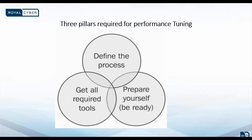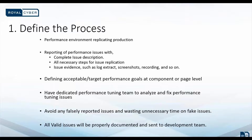The first pillar — defining the process — is the most important task. This process includes elements like maintaining a proper performance load test environment, which is a replica of production. Defining a proper process for reporting performance issues, which includes complete issue description, all necessary steps to replicate the issue, issue evidence such as log extracts, screenshots, recording, and so on. And then, validating the performance issues so we can avoid all falsely reported issues. Defining acceptable target performance goals at component or page level, and also having a dedicated performance tuning team to analyze and fix performance tuning issues.